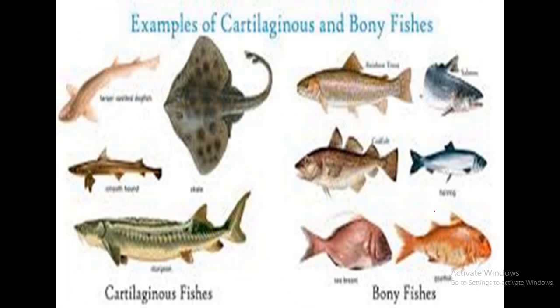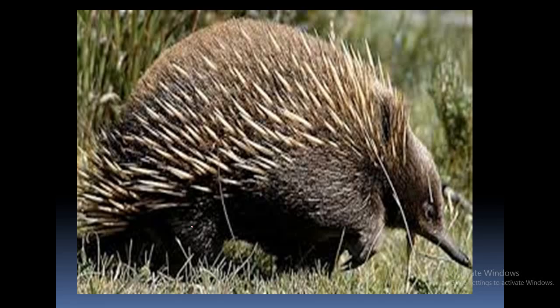Fishes are divided into two categories: cartilaginous fish and bony fish. Fishes whose endoskeleton is made up of cartilage are known as cartilaginous fish — for example, the shark. Fishes whose internal endoskeleton is made up of bones are known as bony fishes, also called Osteichthyes. Examples of bony fishes are trout and rohu.